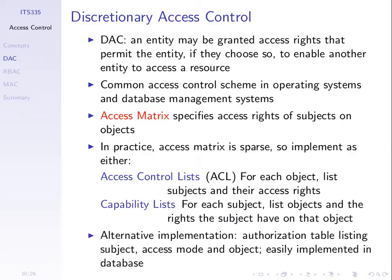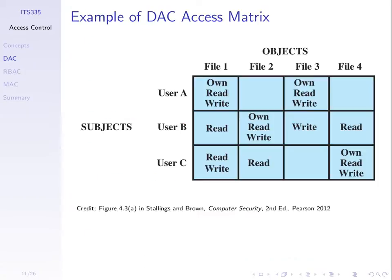The general way to specify who can do what is a matrix. We have a set of resources or objects, a set of users or subjects, and then we form a matrix. In each element of that matrix we specify what the subject can do with what resource — the permission or access right. In a very simple example we have four files and three subjects, and we specify the access rights in the elements of that matrix.